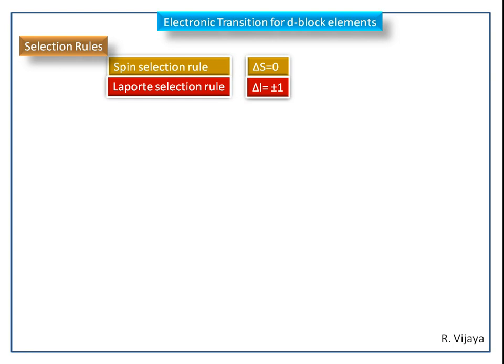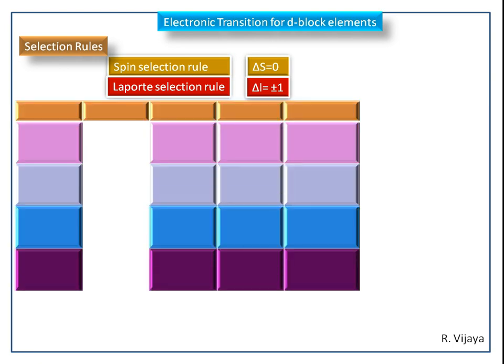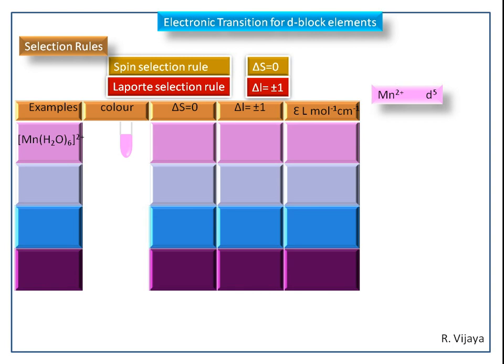Now we see the electronic transitions for some D-block complexes. First, we consider the Hexa-Aqua-Manganese(II) complex. It is light pink in color. Its valence electronic configuration is 3d5 at the plus 2 oxidation state. This is octahedral geometry, so it is split into T2G and EG orbitals.